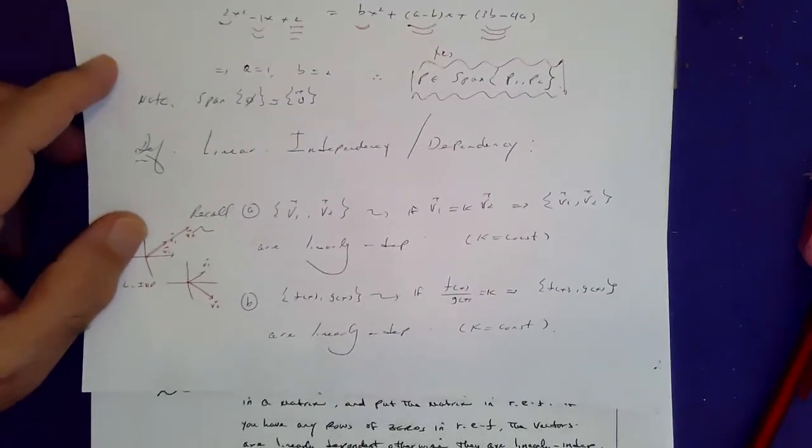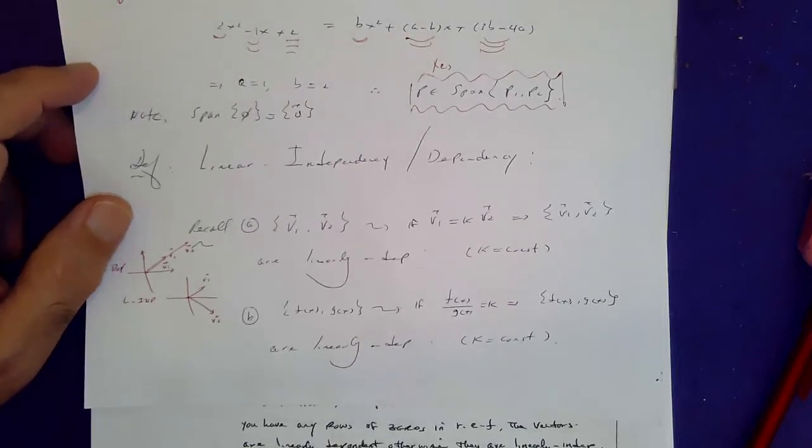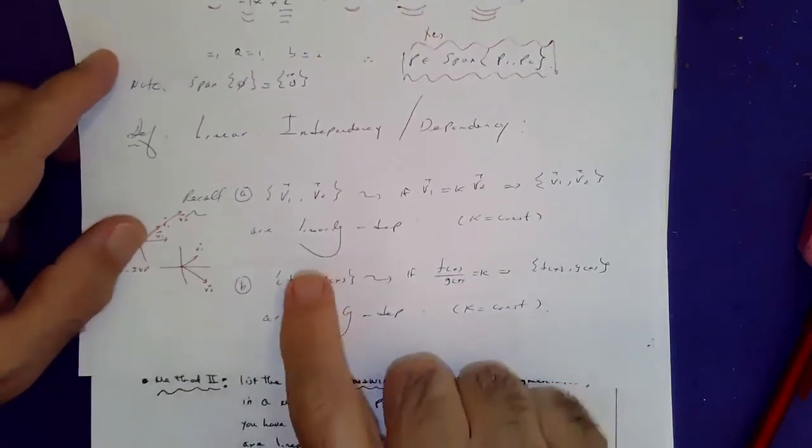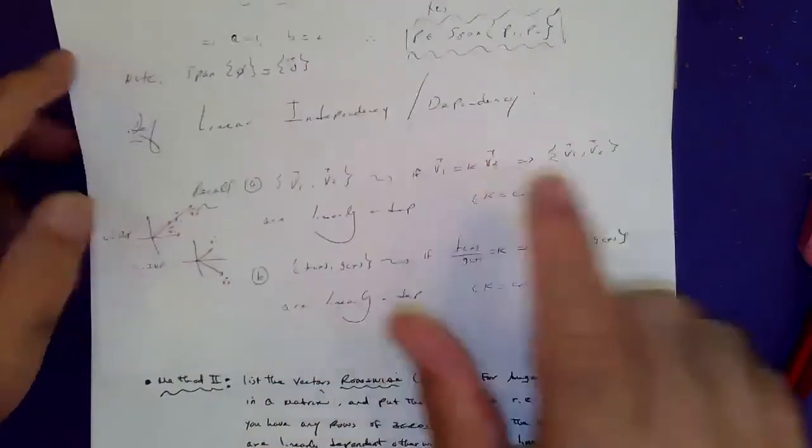Same section, 1.7 and 4.3 in Edwards. So what is the definition of linear dependency and independency?